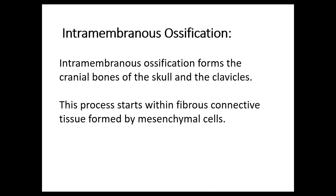For question number five: what is formed during intramembranous ossification? Intramembranous ossification forms the cranial bones of the skull and the clavicles. All of these are flat bones. This process starts with fibrous connective tissue formed by mesenchymal cells.